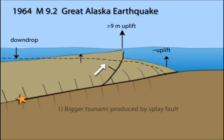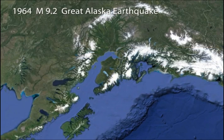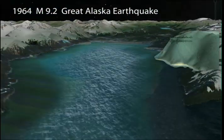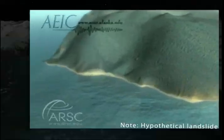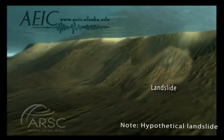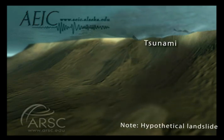Because displacement on steeply dipping splay faults causes larger uplift of the ocean floor, a bigger tsunami is produced, and it starts closer to shore, providing less time to evacuate. In steep-sided fjords and inlets, ground shaking caused landslides, some entirely below sea level, resulting in surges of seawater up to 50 meters high that struck coastal towns, including Seward and Valdez.